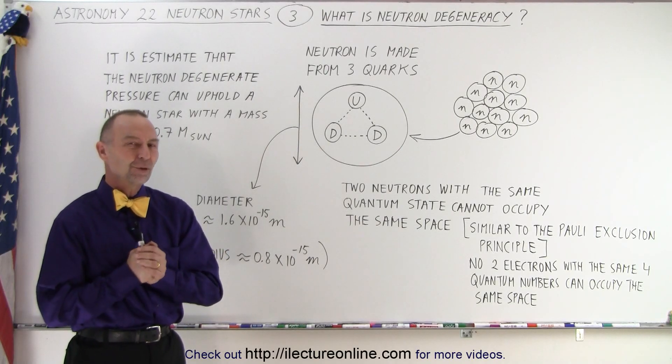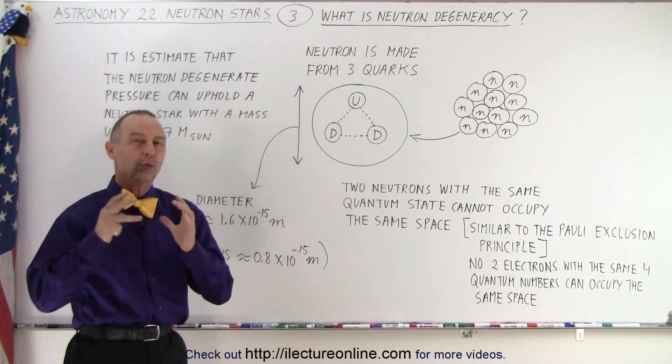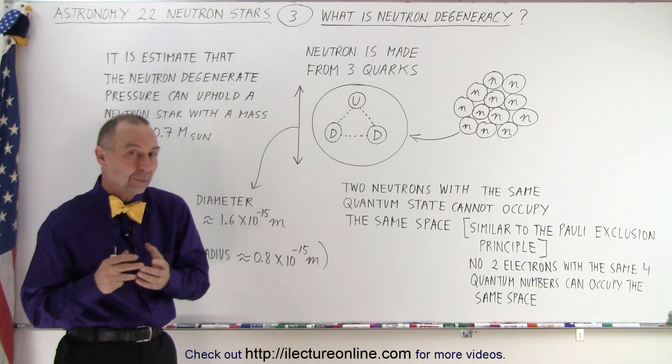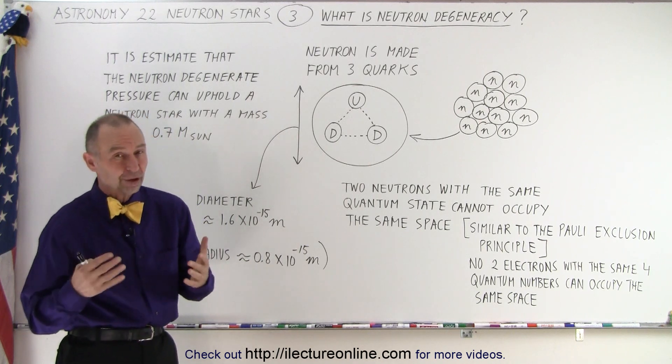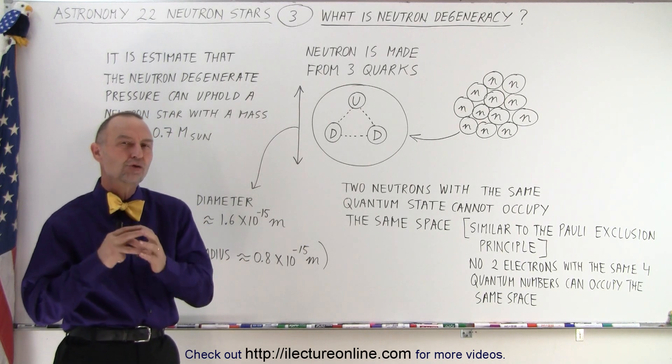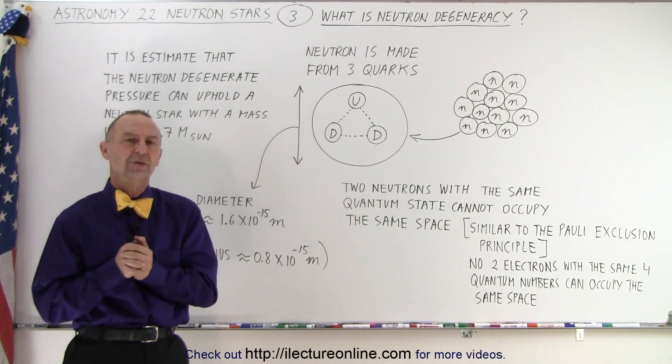Welcome to our lecture online. In the previous video we mentioned that when the core collapsed, something arrested the collapse of the core, and it was a combination of two things: the nuclear strong force pushing back as well as the neutron degeneracy. So the question is, what is neutron degeneracy?